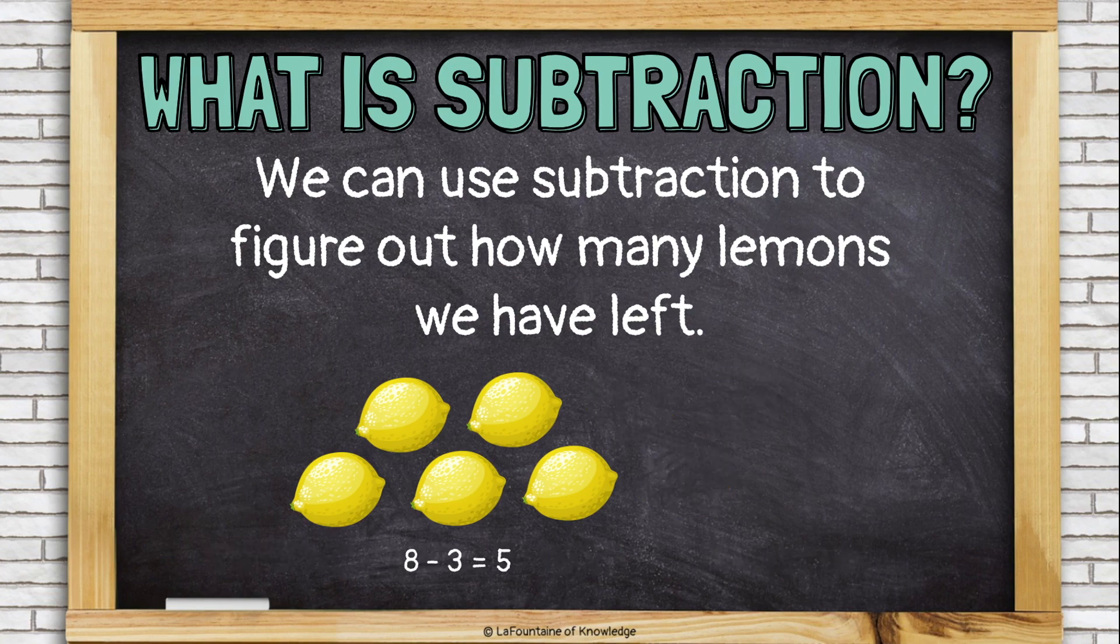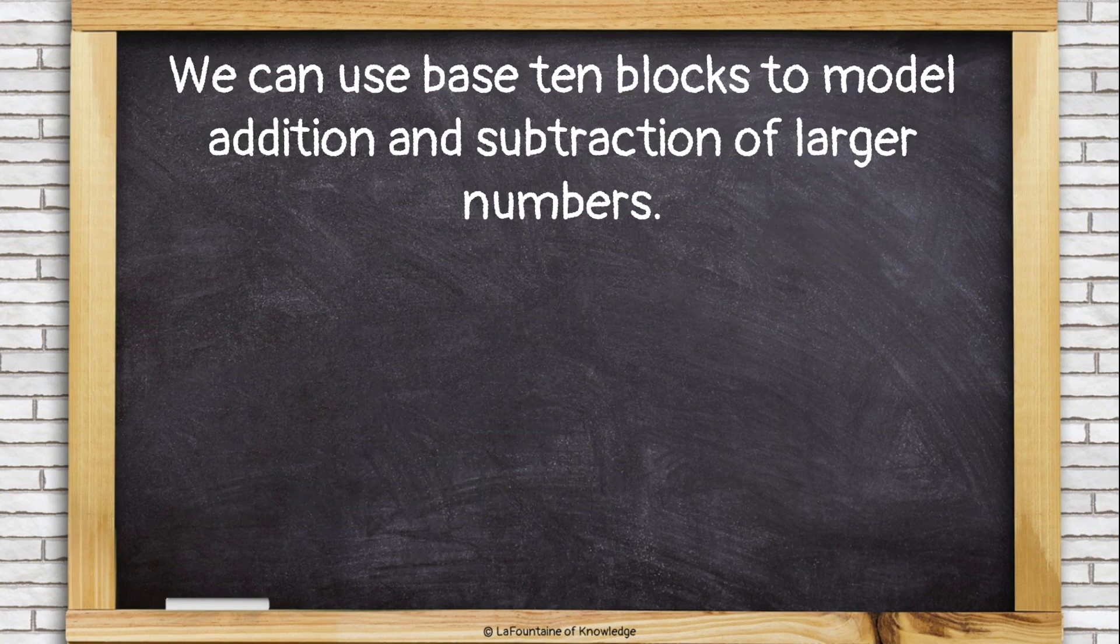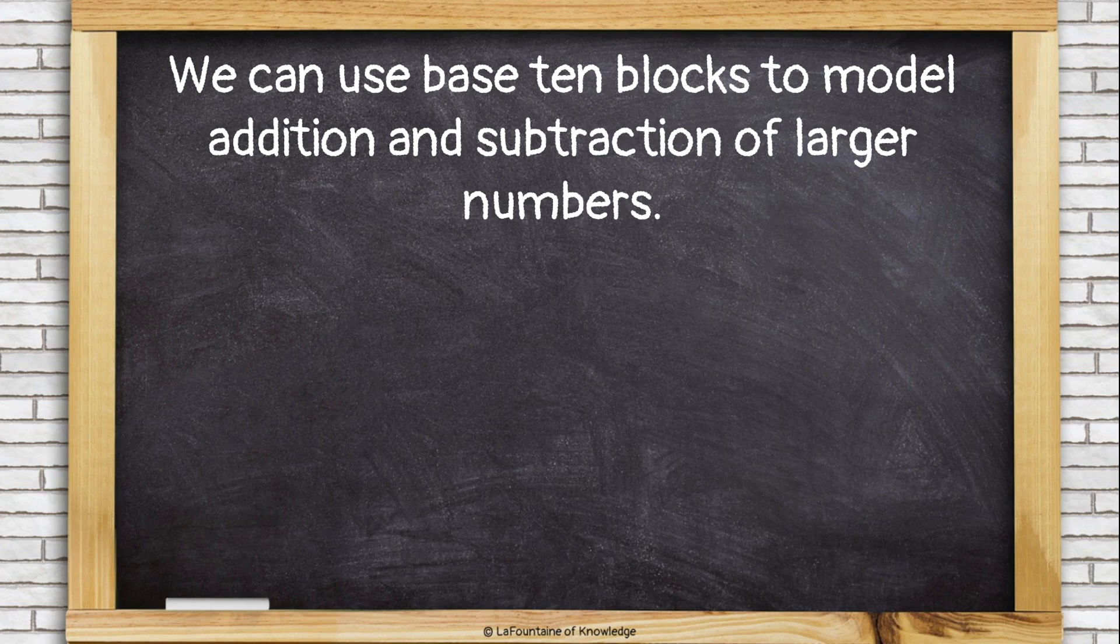8 minus 3 equals 5. We only have 5 lemons left. We can use base 10 blocks to model addition and subtraction of larger numbers. Let's try adding 125 plus 212 using base 10 blocks.